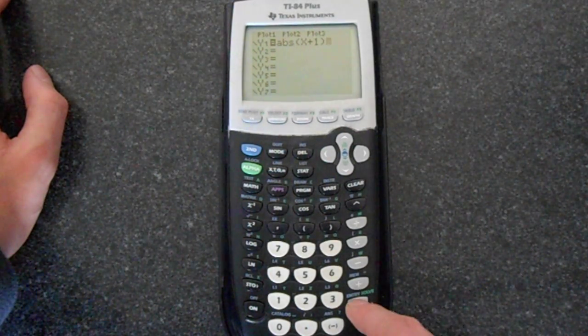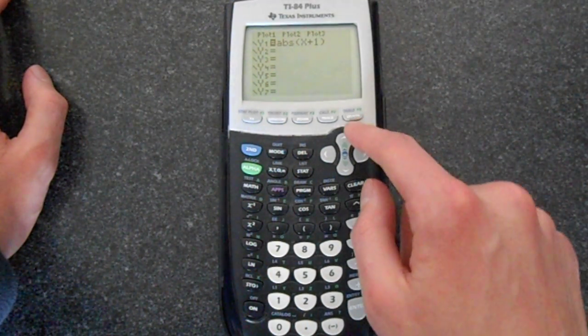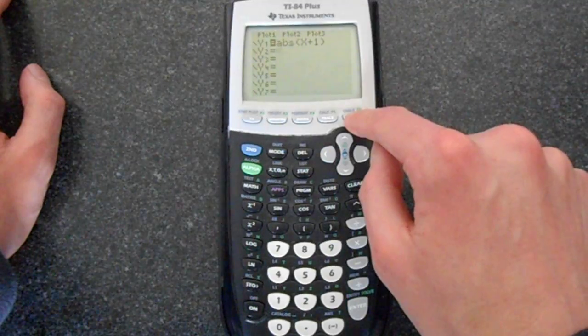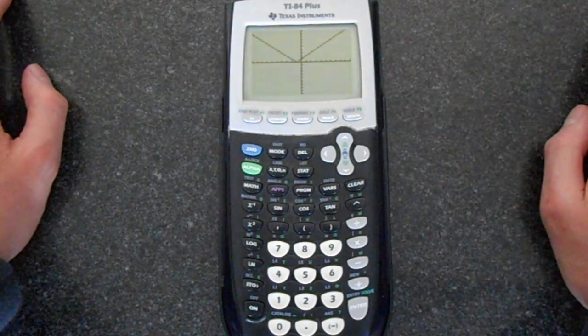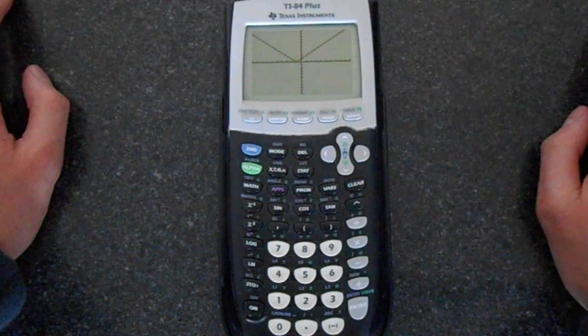Then close the brackets and just enter. And then if we press graph, that draws a graph of the absolute value of x plus one.